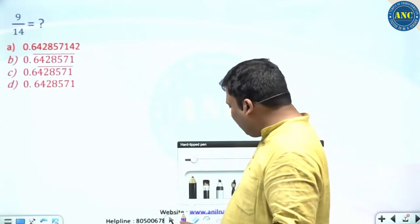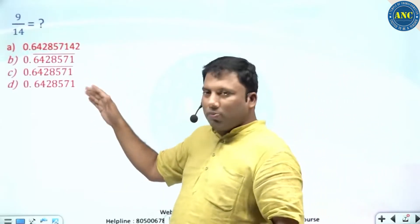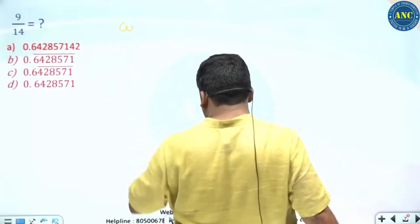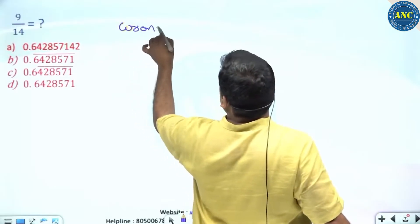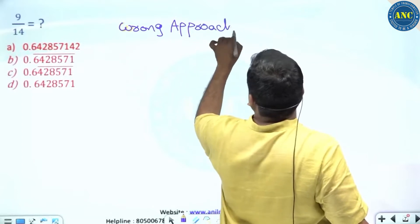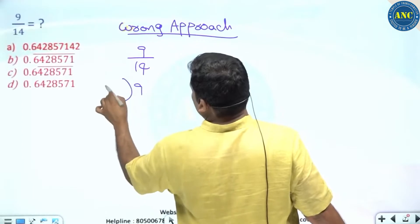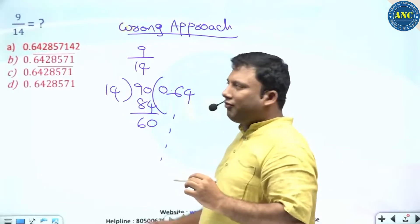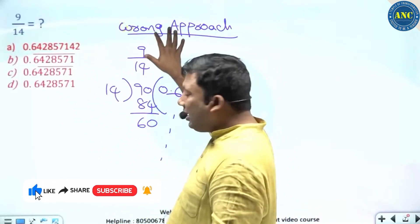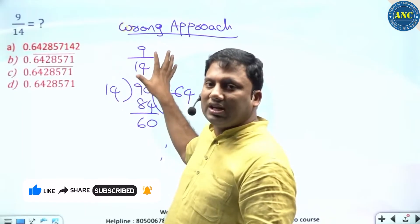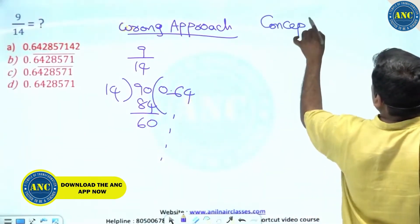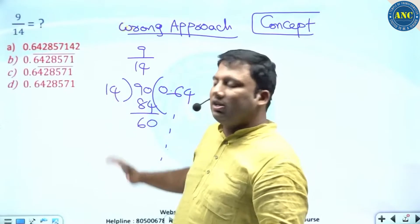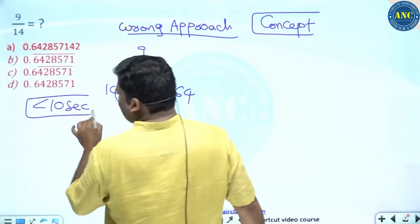See the first question: 9 by 14. 9 by 14 is equivalent to how much? There are four options. What most students do — and unfortunately some teachers might teach — is the wrong approach: they divide 9 by 14 and get 0.6804... Converting a fraction into a decimal like this shows very weak understanding of aptitude. If this question is asked to an Anil Nair student, he will solve it beautifully in less than 10 seconds if he knows the concept.